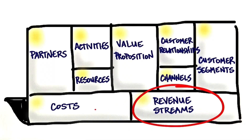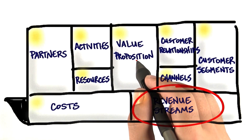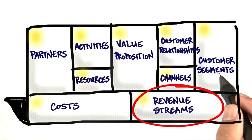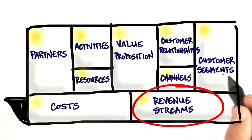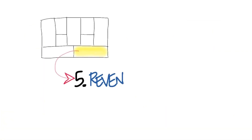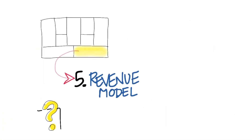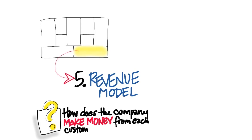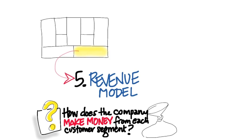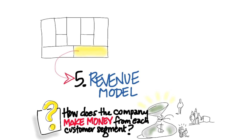The next thing is revenue streams — how do you actually make money from your product and service being sold to customer segments? Revenue streams basically ask the question: what value is the customer paying for? And it has you think about what's the strategy of how you're going to capture that value.